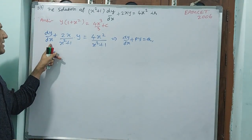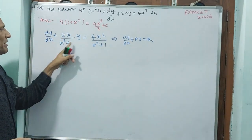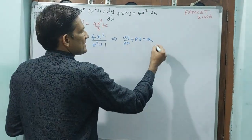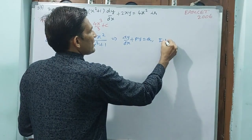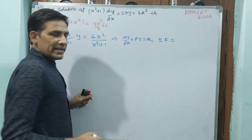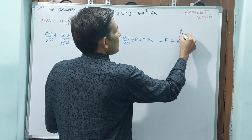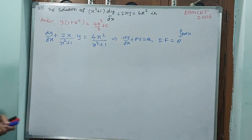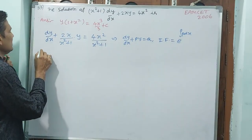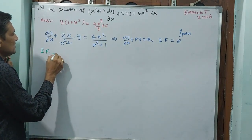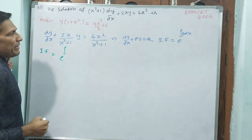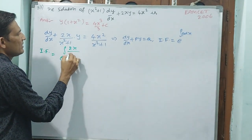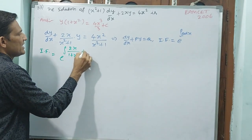This is in the form dy by dx plus Py equals Q. Here y is present, so we identify P as 2x by x squared plus 1 and Q as 4x squared by x squared plus 1. The integrating factor is e to the power of the integral of P dx. Let us find this: integrating factor equals e power integral of 2x by 1 plus x squared dx.